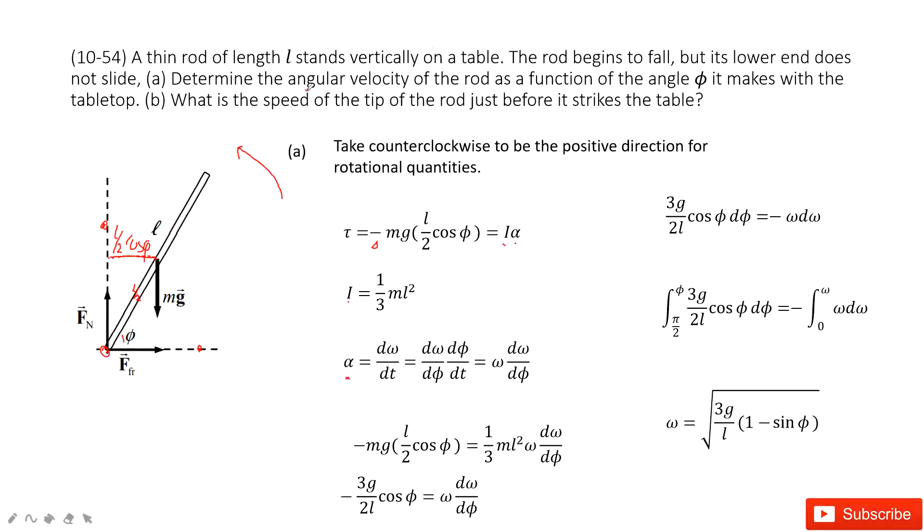Now alpha, angular acceleration. It tells us we need to find angular velocity as a function of phi. So we know the angular acceleration is d omega dt. But we need to bring phi inside, so we do a small trick. We have d omega d phi times d phi dt.